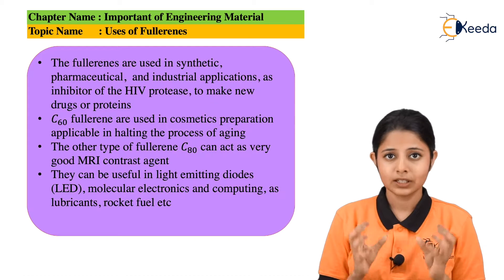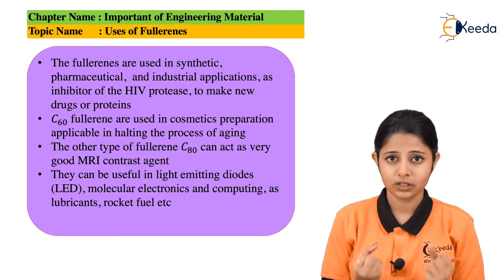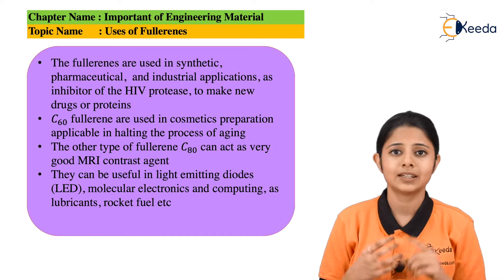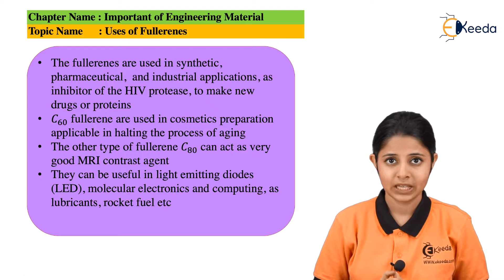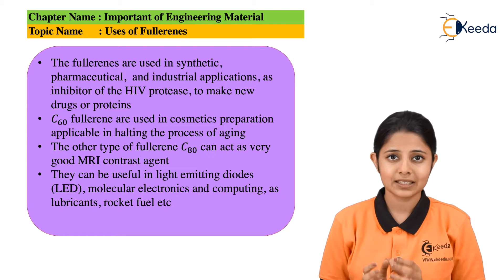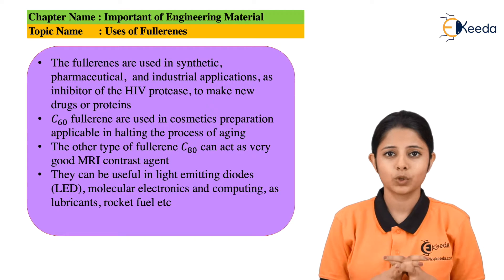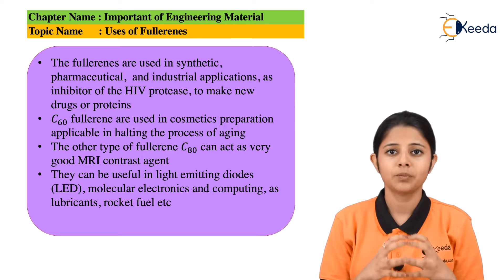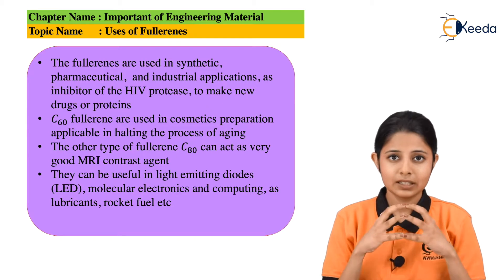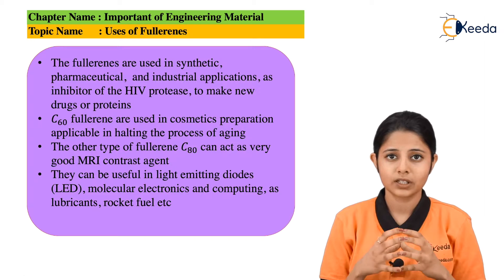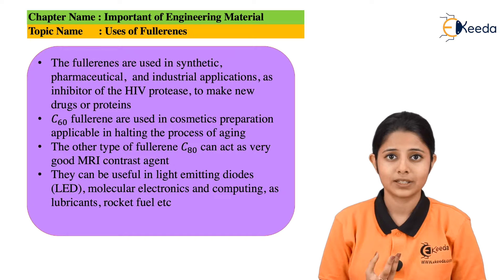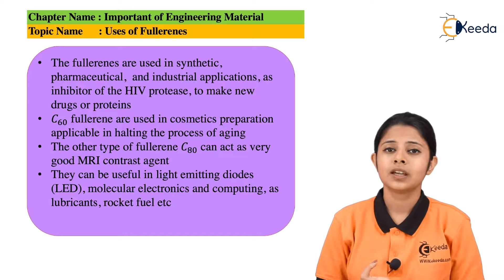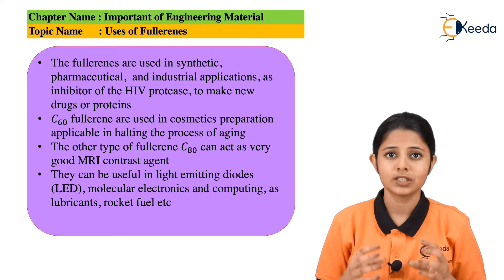C60 Fullerene is used as a drug. It is used for industrial purposes, pharmaceutical purposes, and it has many other uses as well. C60 means 60 carbons clubbed together in the form of a sphere, and this was synthesized by Sir Buckminster Fullerene. This compound is extremely useful when it comes to industries, medicines, making drugs, and many other pharmaceutical applications.